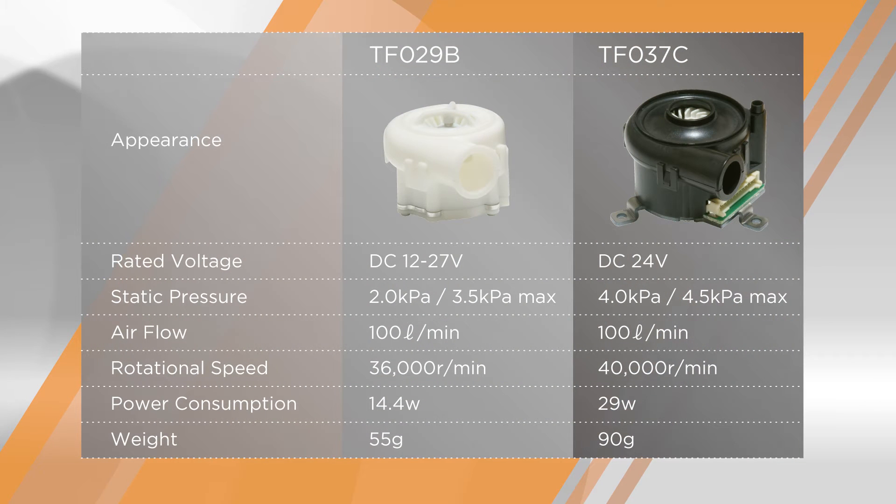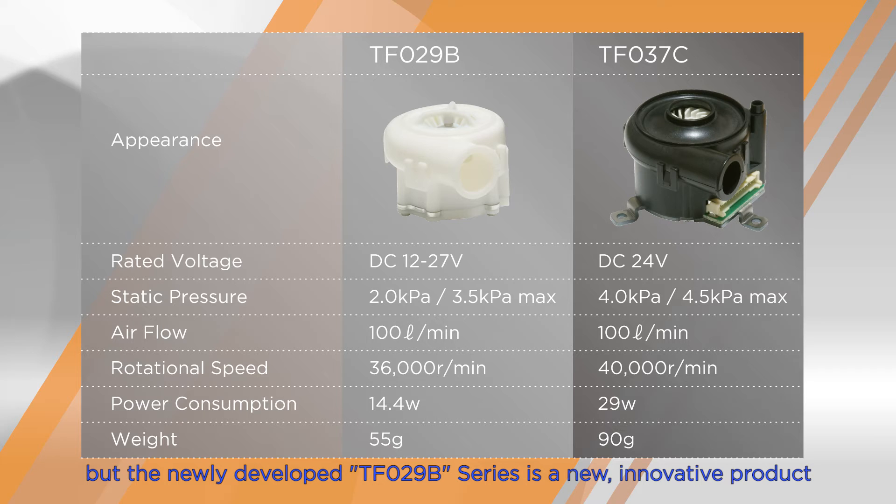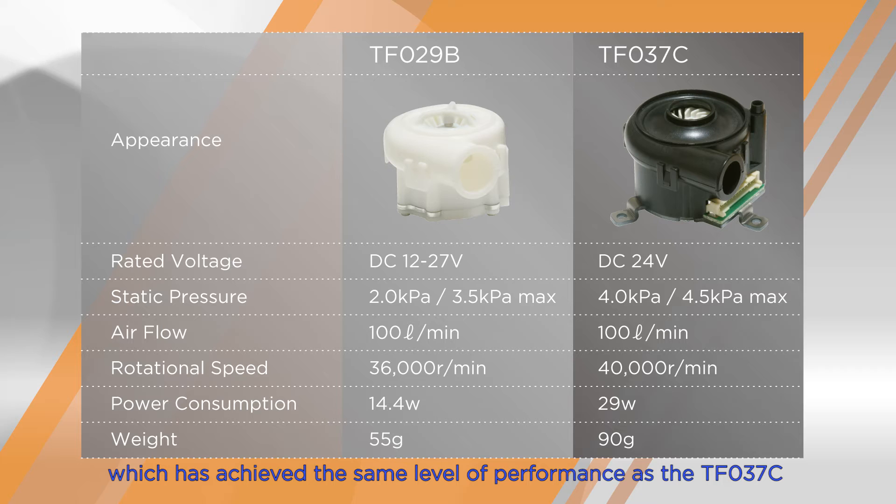The main specifications of the two series are as follows. The TF-037C series is a very compact product, but the newly developed TF-029B series is a new innovative product which has achieved the same level of performance as the TF-037C, while drastically improving power saving and achieving an even smaller size and lighter weight.